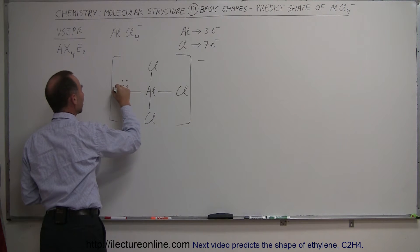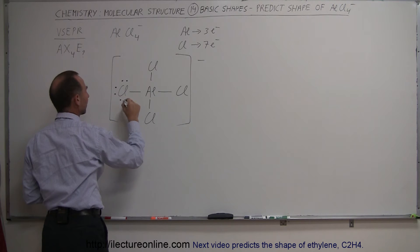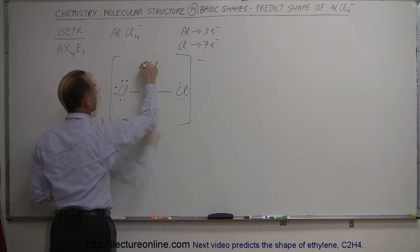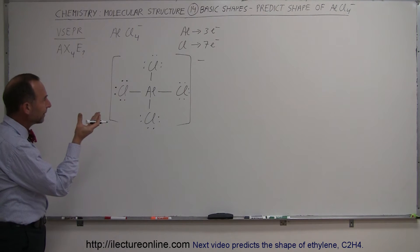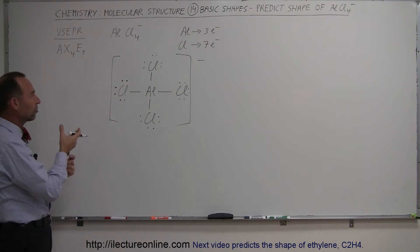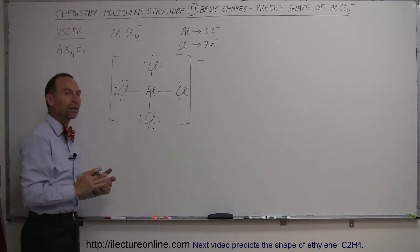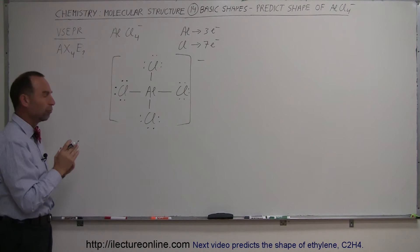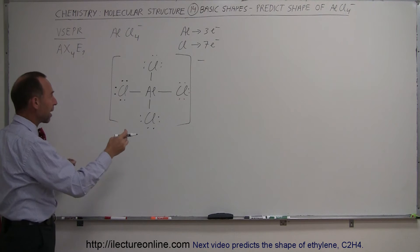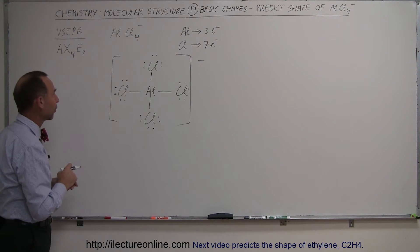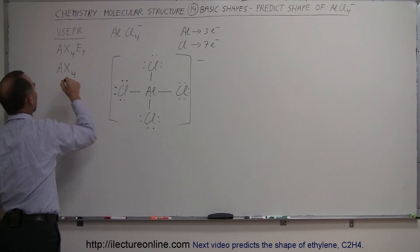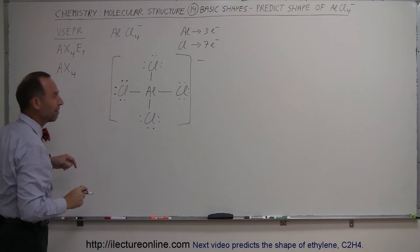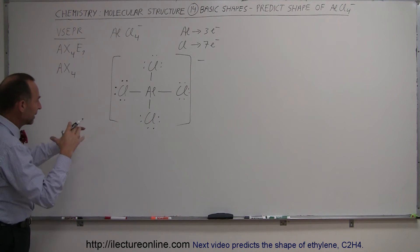Of course, each of the chlorines will have three free electron pairs. Now remember, even though it did gain an extra electron, aluminum has no free electron pairs — just four sets of two electrons making bonds with chlorine. And so therefore it has no free electrons. So the VSEPR structure notation will look like that: one central atom and four atoms on the outside.